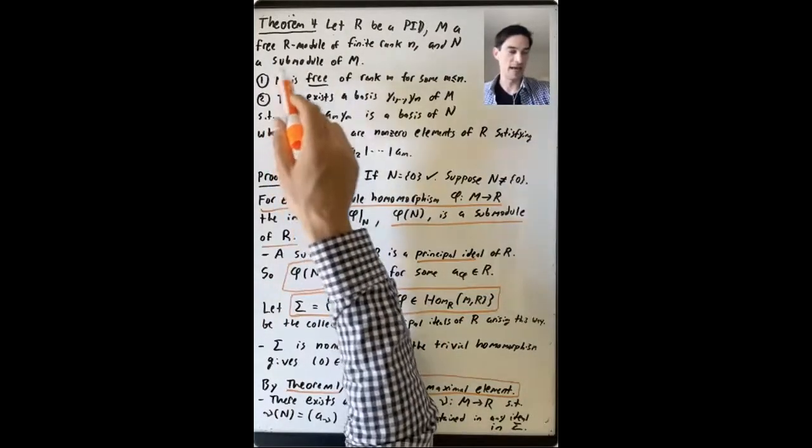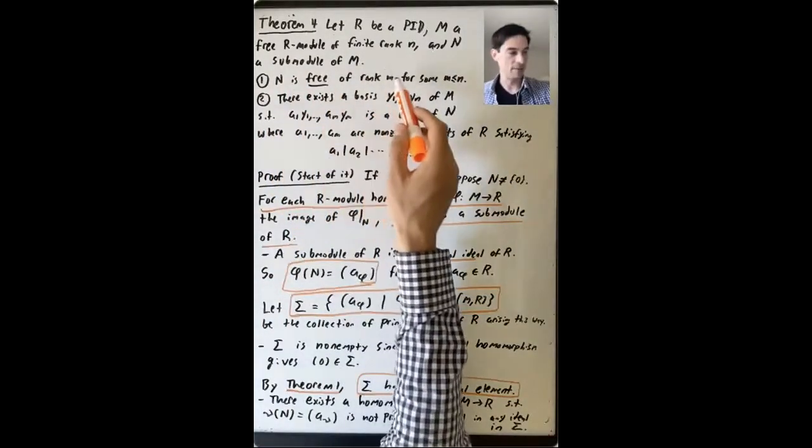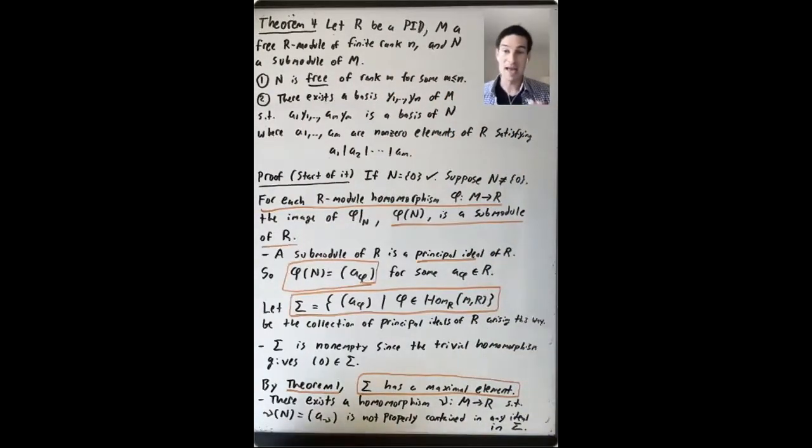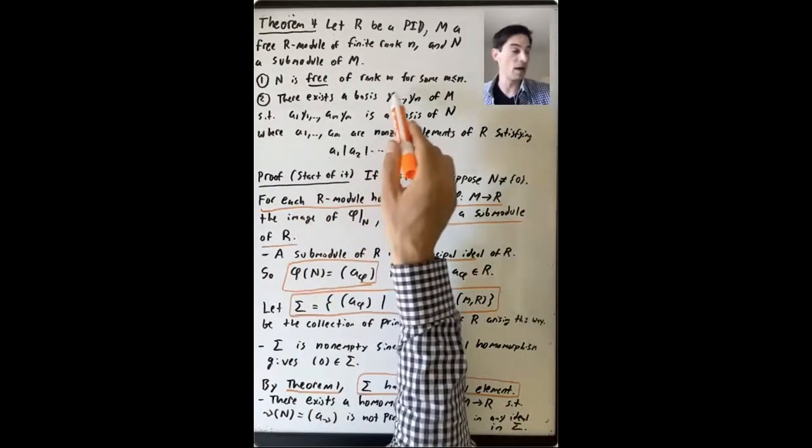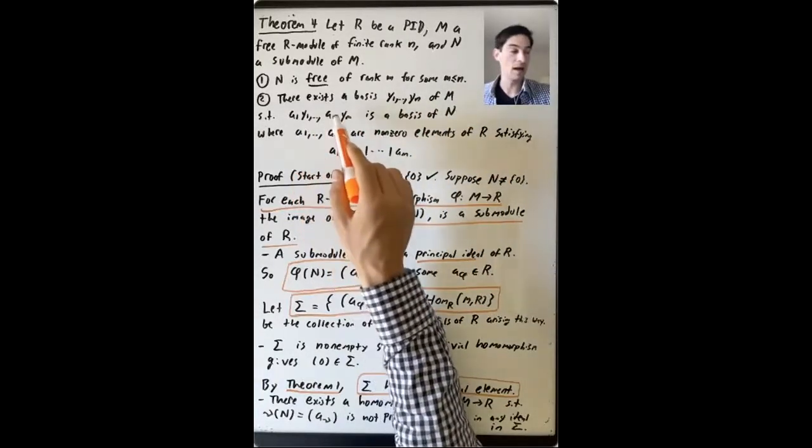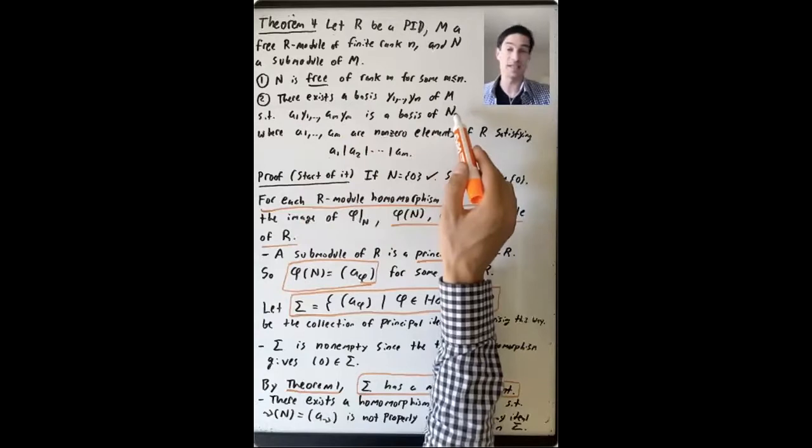Then the submodule N is free of rank M, where M is less than or equal to N. And there exists a basis Y1 up through YN of M, such that A1Y1 up to AMYM is a basis for N.